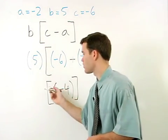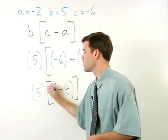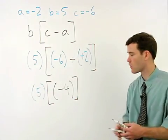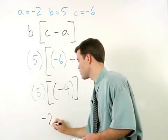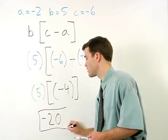We have a 5 outside our brackets, which multiplies times the negative 4 to give us negative 20 for our answer.